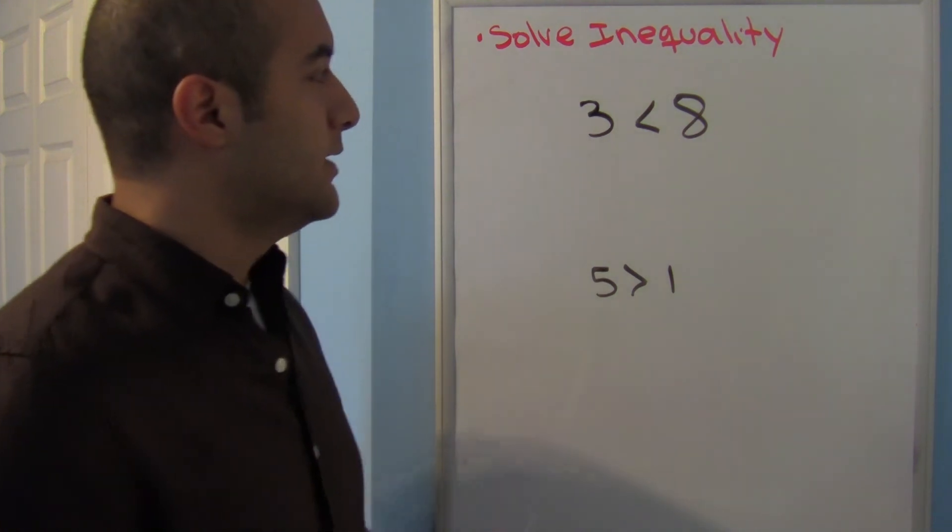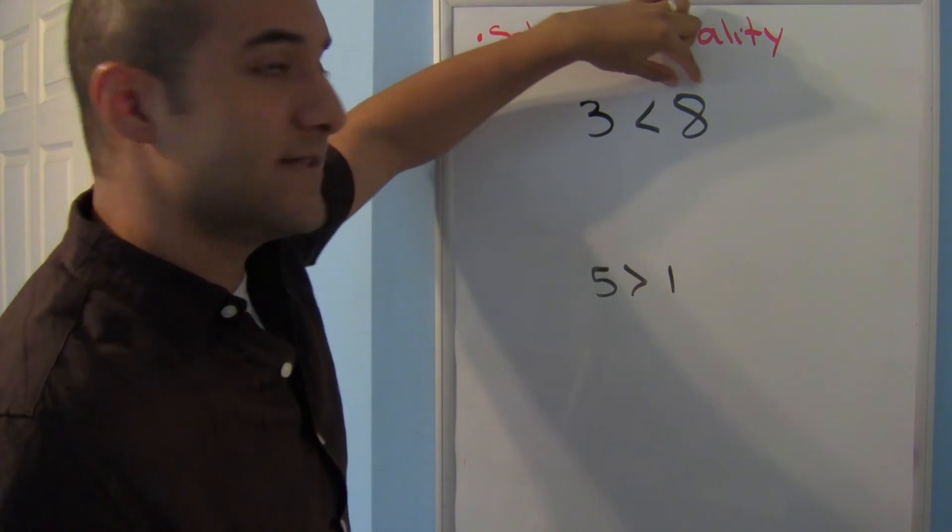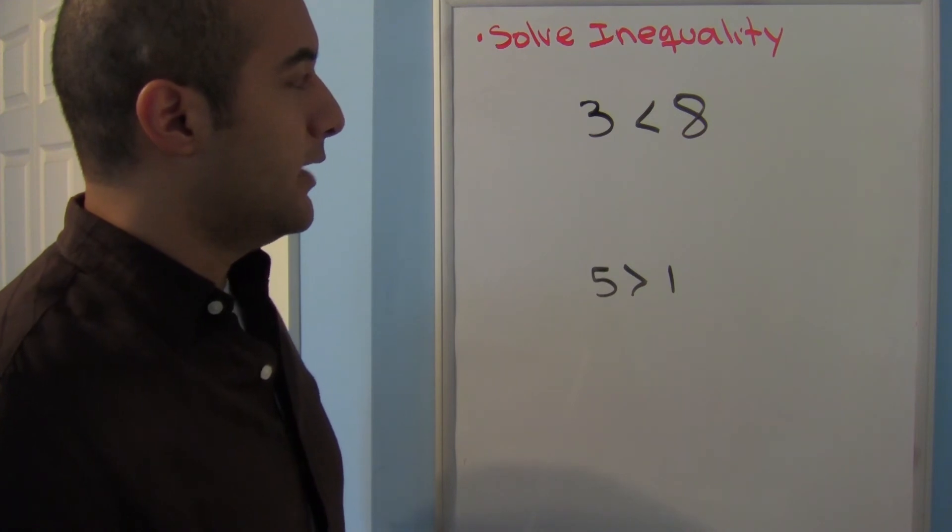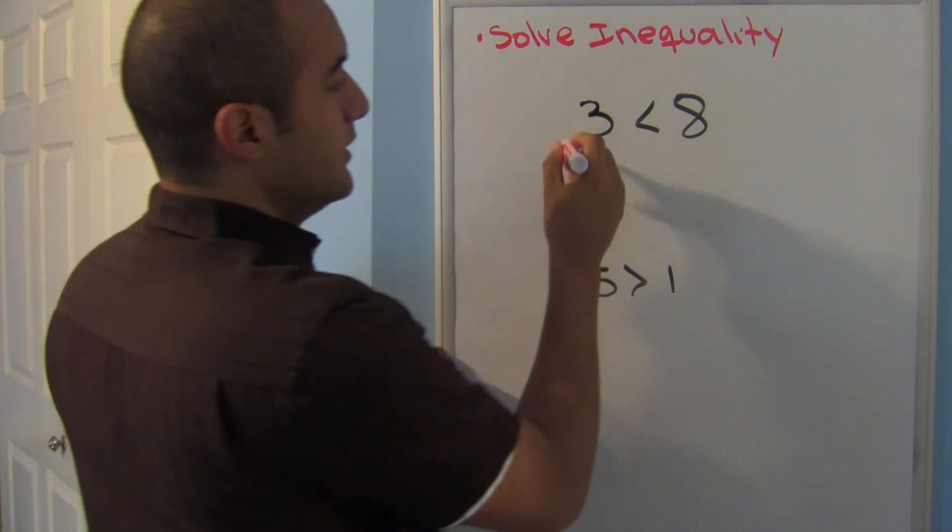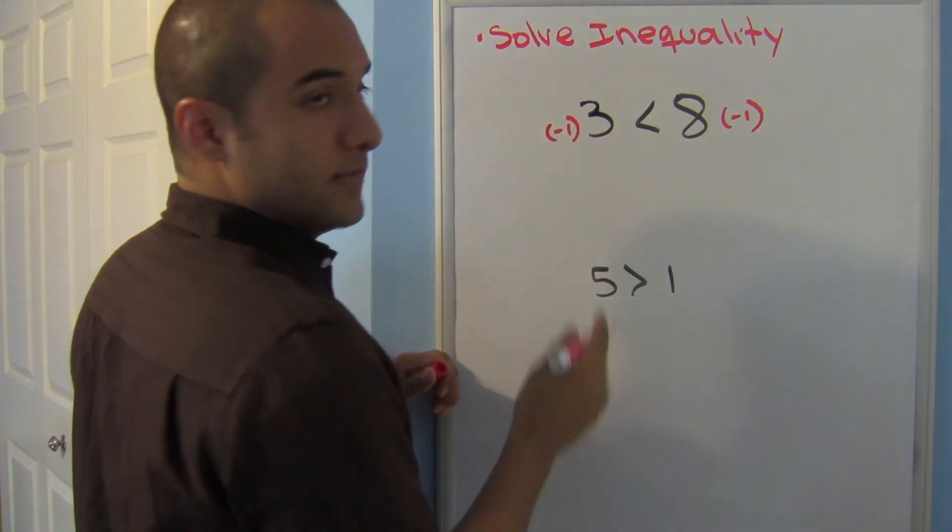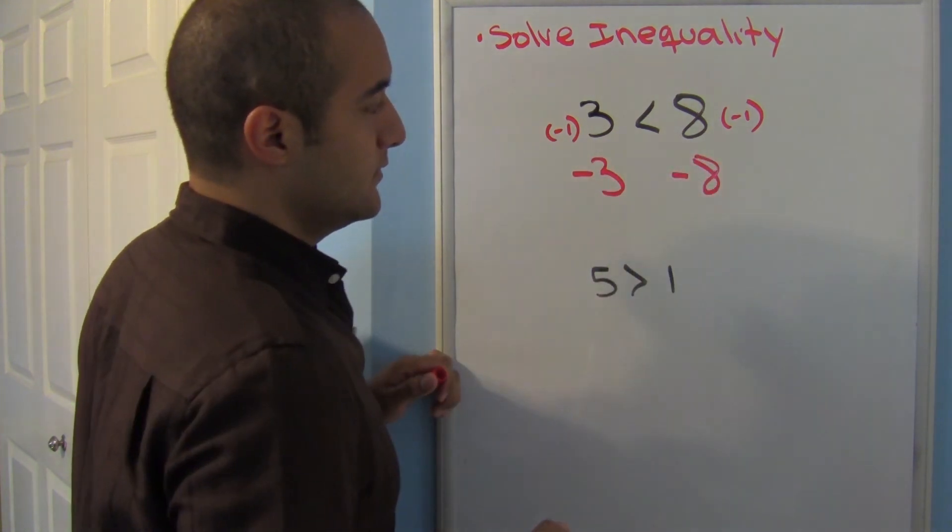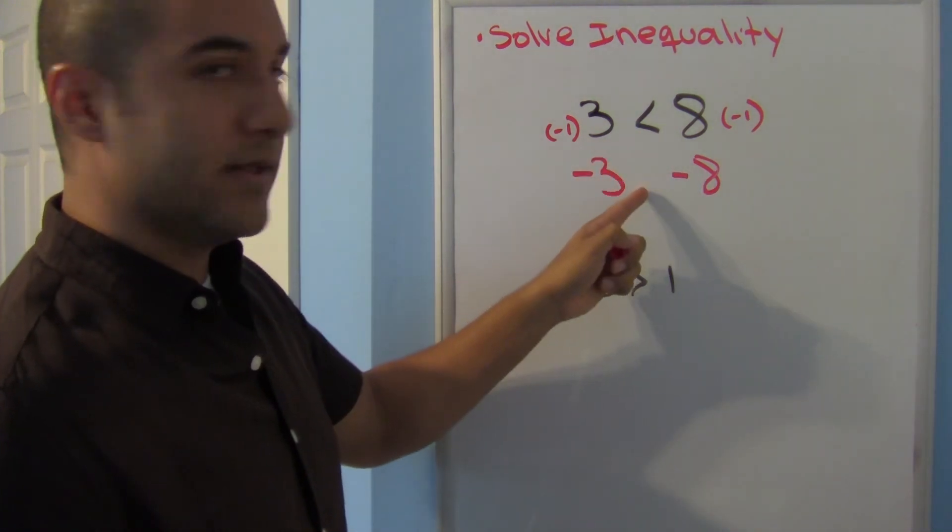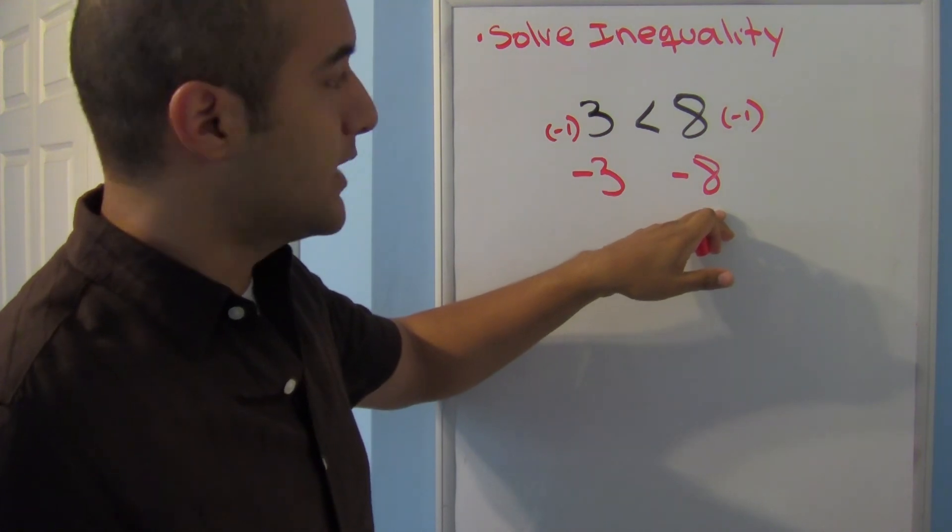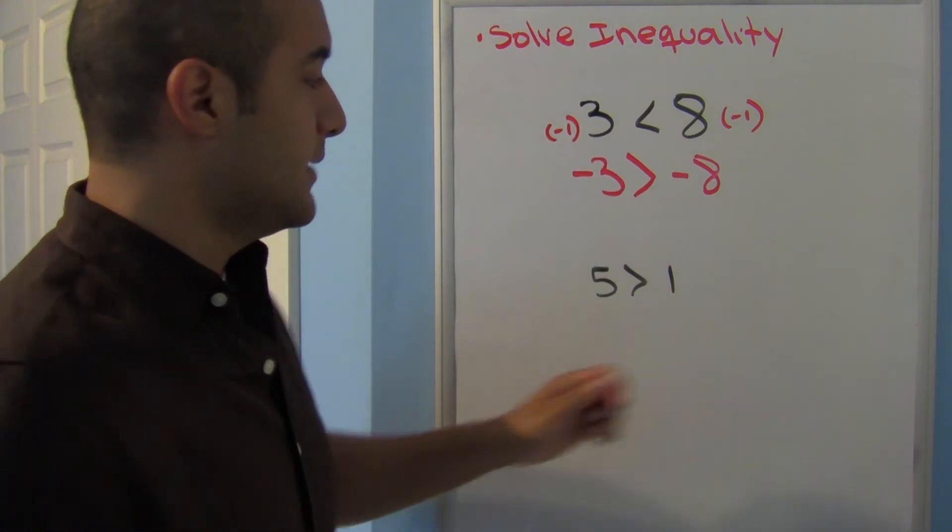Now why does that happen? Let's look at the two problems I have so far. This says 3 is less than 8 and 5 is greater than 1. Both of them are true. Now if I multiplied this by a negative 1, let's see what happens. This says negative 3 and this says negative 8. If I just brought that symbol down, it would say that negative 3 is less than negative 8. But we know that's not true. That's not true. Therefore my sign must face the other way.